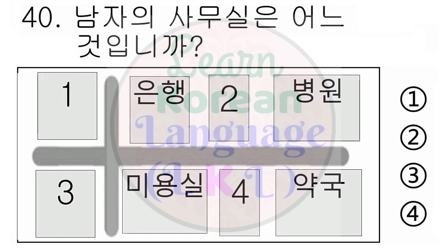31번. 저 사람이 누구예요? 1번. 저건 제 구두예요. 2번. 중국으로 출장 가요. 3번. 저기가 우리 회사예요. 4번. 우리 회사 사장님이에요. 다시 들으십시오. 저 사람이 누구예요? 1번. 저건 제 구두예요. 2번. 중국으로 출장 가요. 3번. 저기가 우리 회사예요. 4번. 우리 회사 사장님이에요.